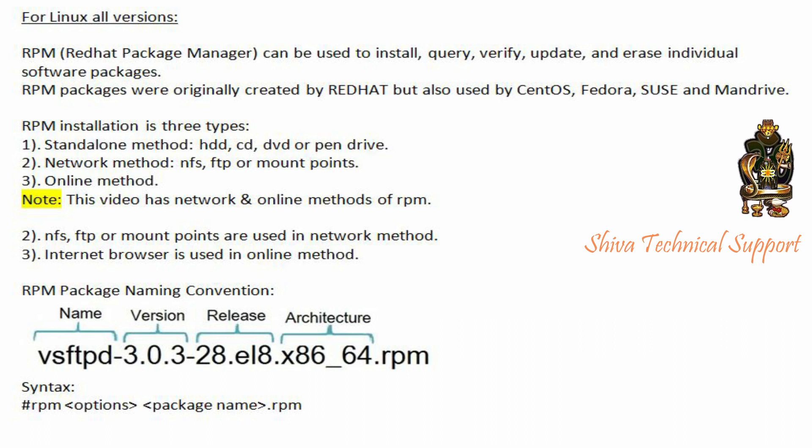RPM installation is of three types. First is the standalone method, in which we can use a hard disk drive, CD, DVD, or pendrive. Second is the network method. In the network method, we can use NFS, FTP, or mount points.